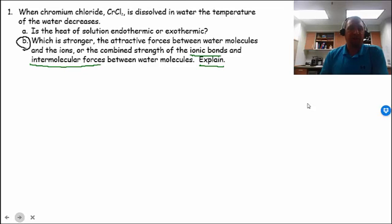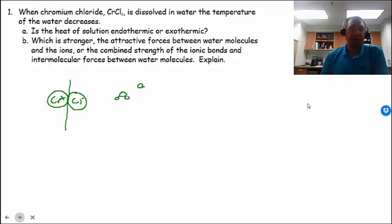Well, again, when you dissolve anything, there's three processes. In this case, we have chromium ions, chromium 2+, and chloride ions. We have to break that bond, and that takes energy. We also have to break the hydrogen bonds between water molecules. We have to break those, so that takes a certain amount of energy.